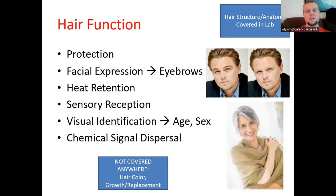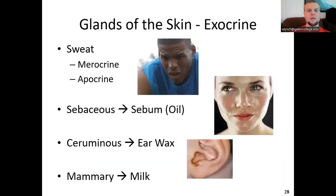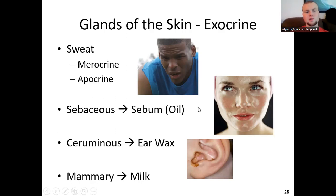The glands in the skin are exocrine glands, secreting their product to the outside. Sweat glands come in two types: eccrine and apocrine. We also have sebaceous glands secreting sebum — the oily compound coating the skin surface — ceruminous glands secreting earwax in the auditory canal, and mammary glands producing milk in females.